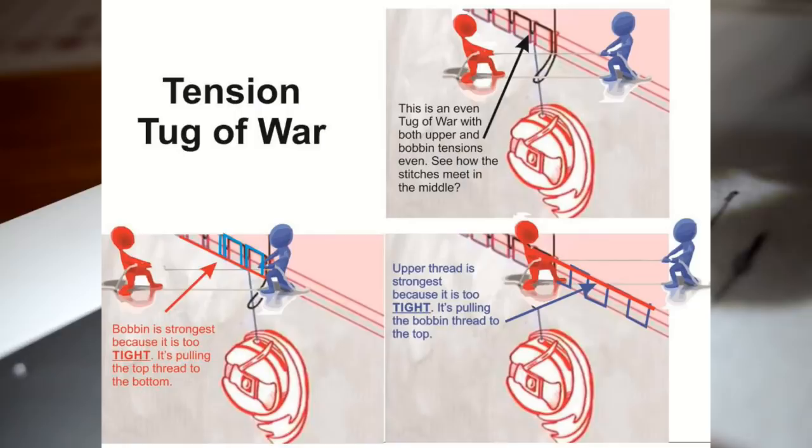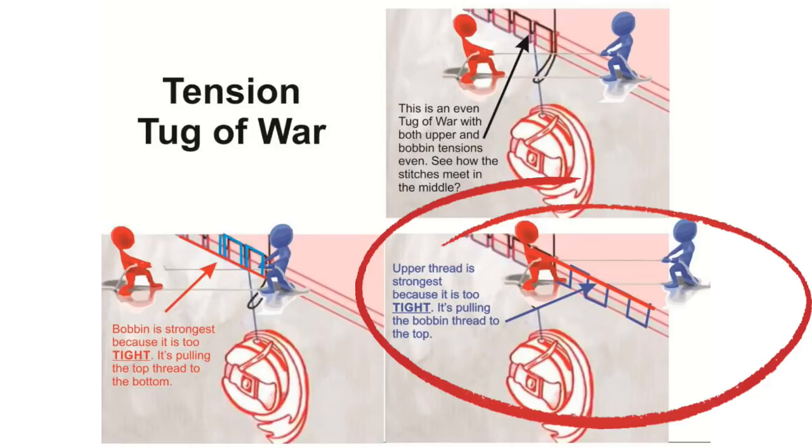Now needless to say, if the bobbin thread was being pulled to the top, that would mean the opposite. That would mean that the upper thread is stronger. So therefore the tension on the top thread needs to be lessened so it doesn't pull the bobbin thread up. To loosen the top tension, turn your dial to the left.